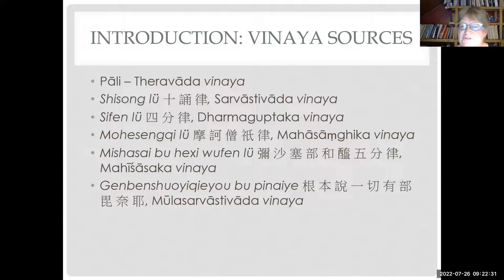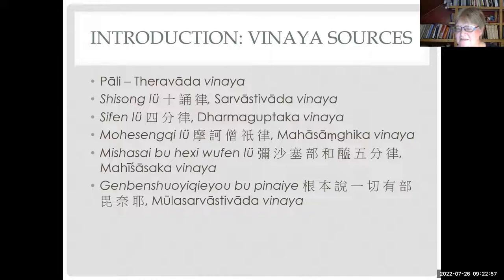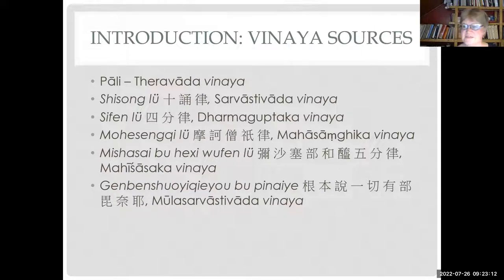The first sources Daoxuan would refer to are the Vinaya sources. I will introduce them a little bit. Vinaya sources are normative texts full of rules, and today we have six extant Vinayas. One is in the Pali language - the so-called Theravada Vinaya, which is the standard Vinaya in Southeast Asia today. It has never been translated into Chinese, or at least no translation is extant. But there is a commentary, the Samantapasadika, that is translated into Chinese, and that will be cited by Daoxuan.